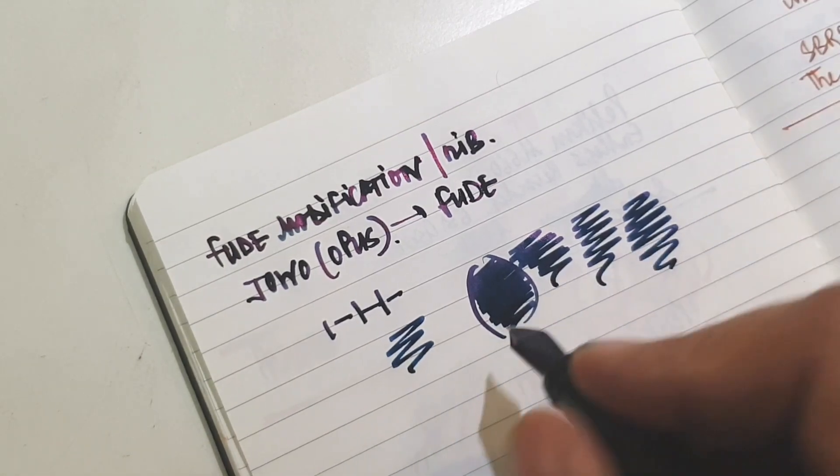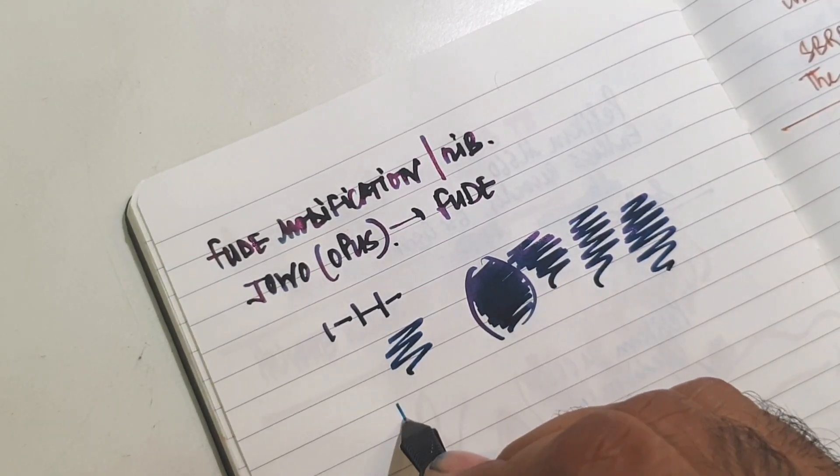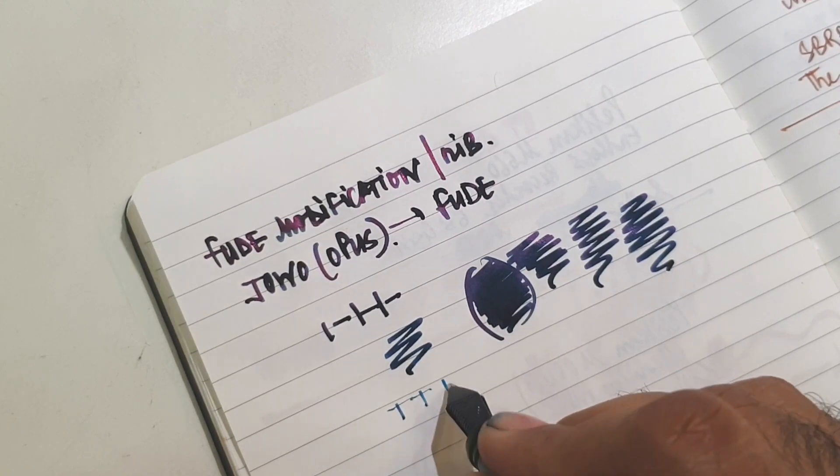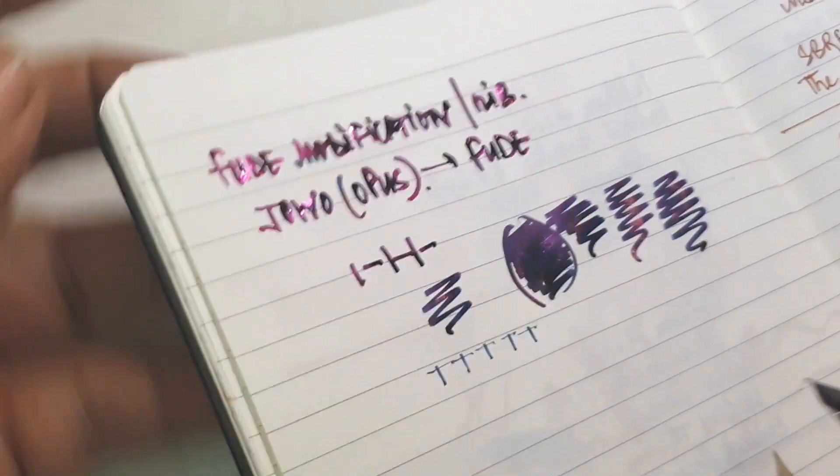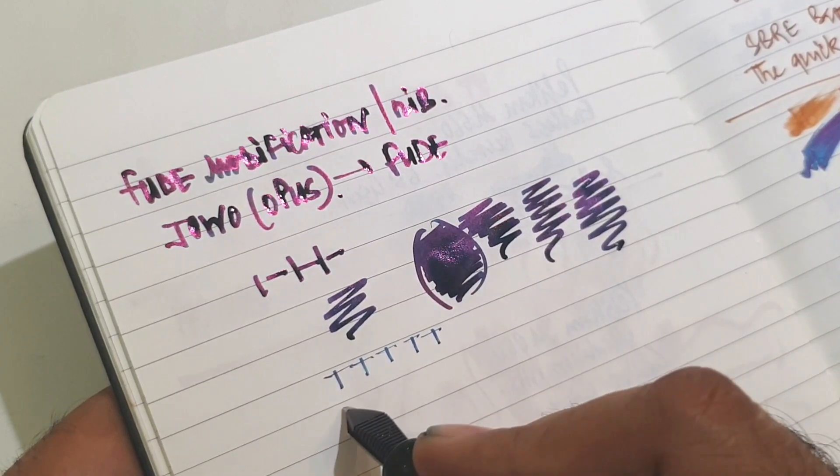If you reverse the pen, it is going to write with a lot of feedback and it writes like a stub you can see.